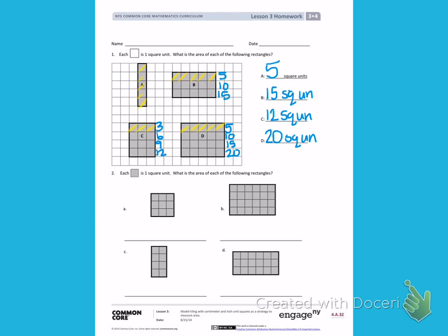Number 2. Each square is one square unit. What is the area of each of the following rectangles?